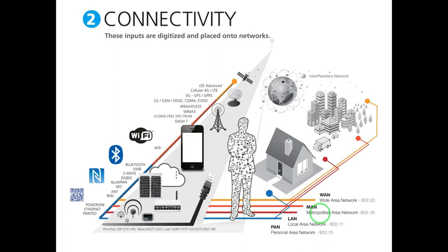Connectivity can be a local area network, a wide area network, or a personal area network. There are a lot of communication technologies available. For example, RFID, NFC, 6LoWPAN, Zigbee, Z-Wave, Bluetooth Smart, and ultra-wideband all come under the personal area network for low-power short-range communication. This is followed by Wi-Fi for local area networks, and then wide area networks like 2G, 3G, 4G, and Long Term Evolution LTE.